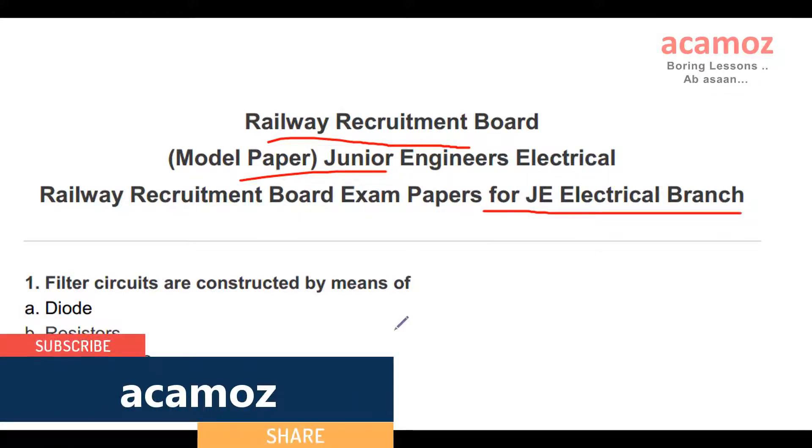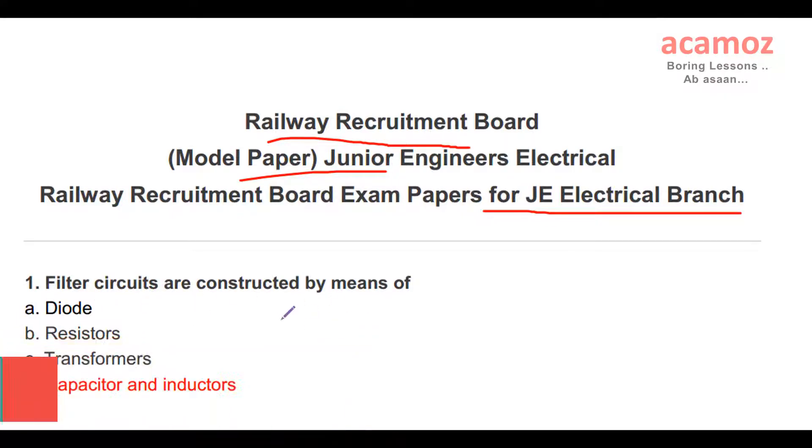First question: Filter circuits are constructed by means of? When we convert AC to DC, the output is pulsating DC. To remove this pulsating output, we use a filter. So the answer is capacitor and inductor.